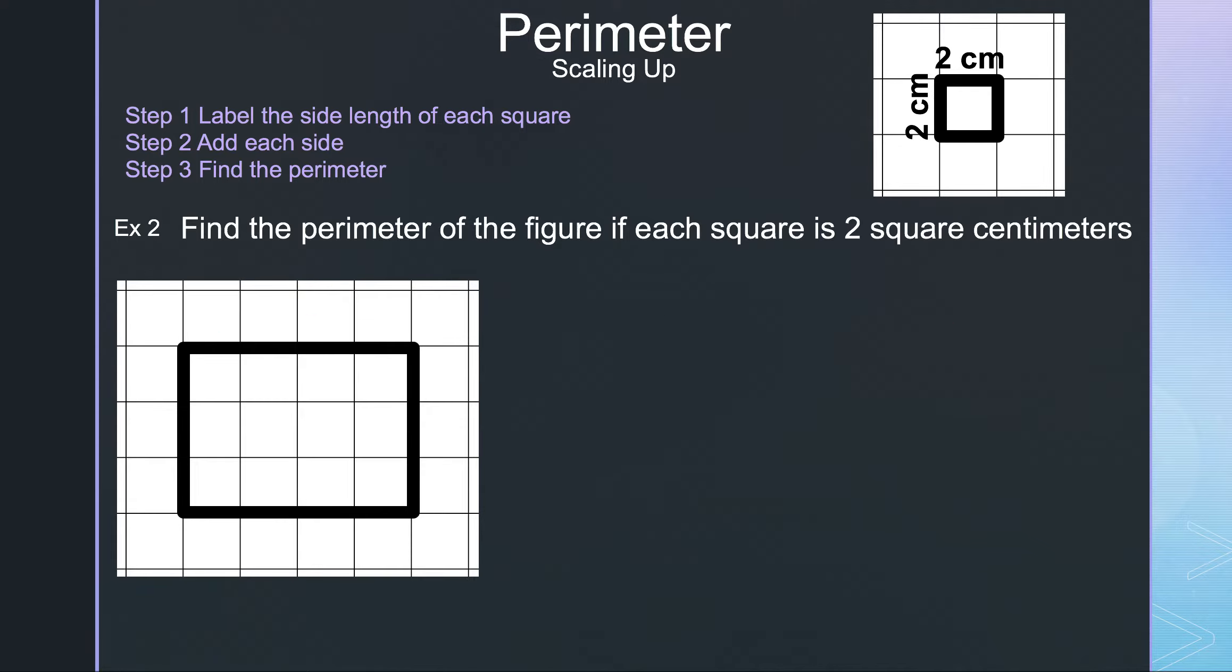Let's take a look at example 2. Let's read the question and see if anything is different. Find the perimeter of the figure if each square is 2 square centimeters.